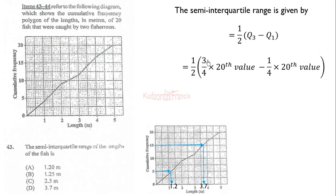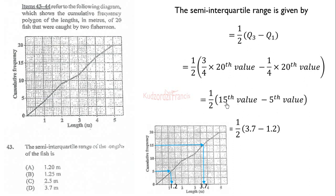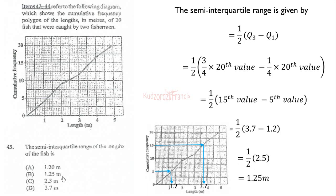The total frequency is 20, so three-quarters of 20 gives the 15th value for the third quartile, and one-quarter gives the fifth value for the first quartile. Tracing these values on the graph, the interquartile range comes to 2.5, and half of 2.5 is 1.25. Therefore the semi-interquartile range is 1.25.